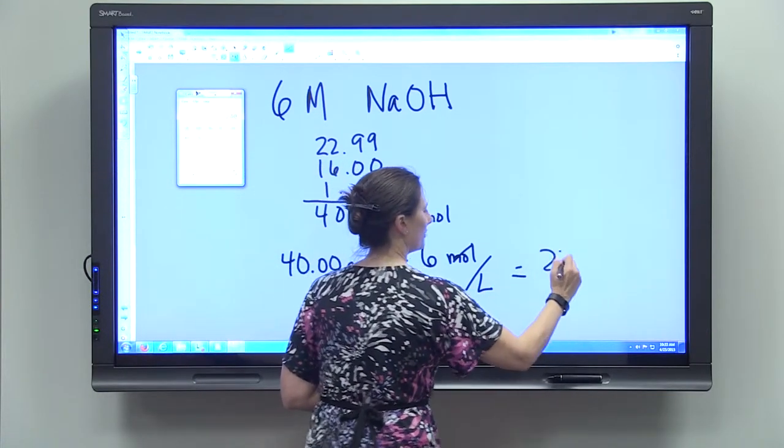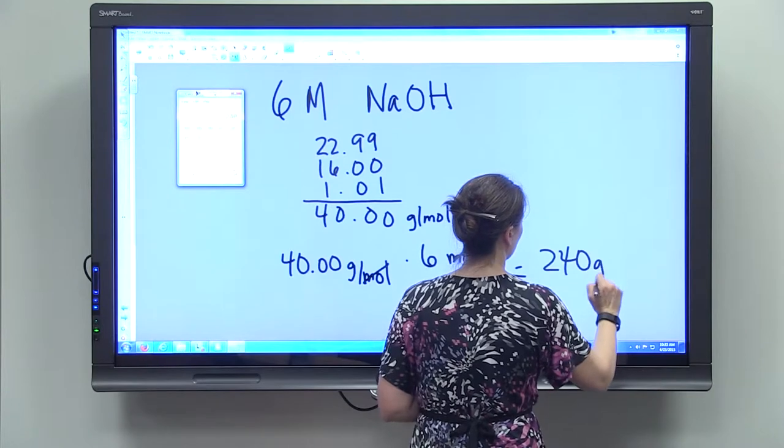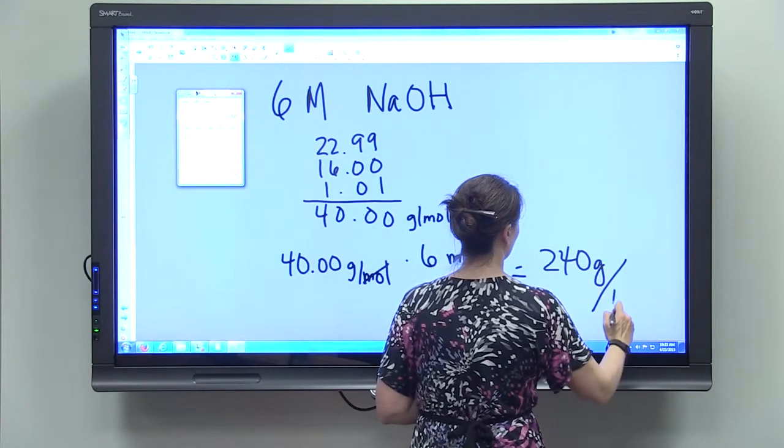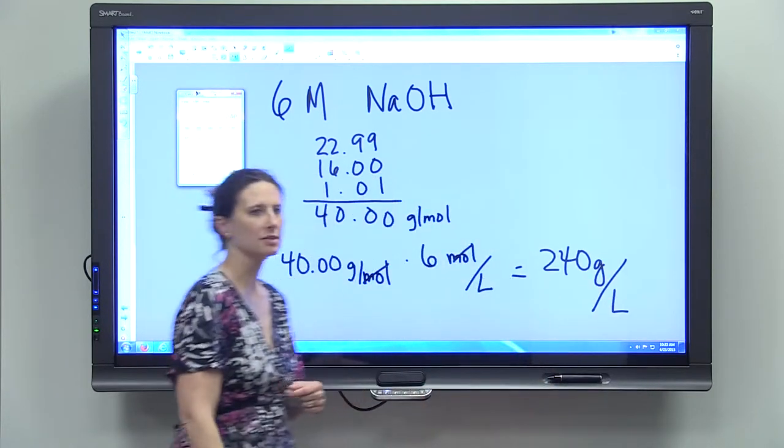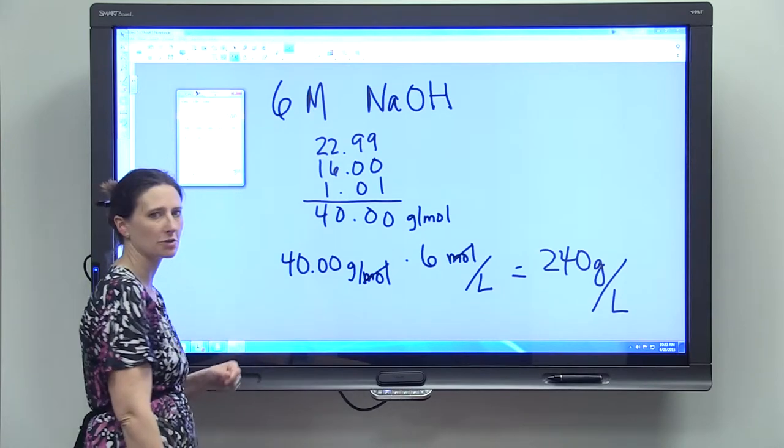Gives you 240 grams of sodium hydroxide per liter of solution to get a 6 molar sodium hydroxide solution.